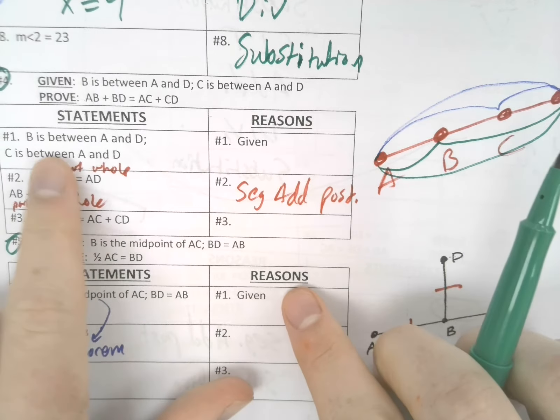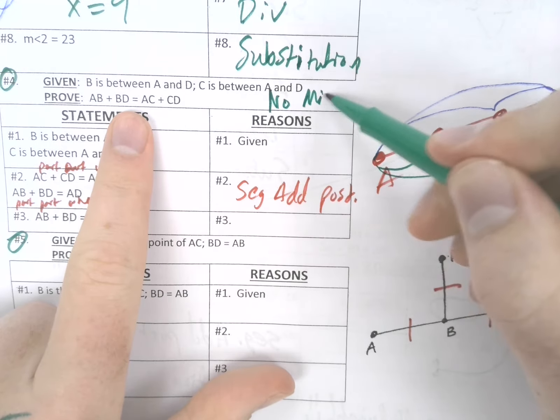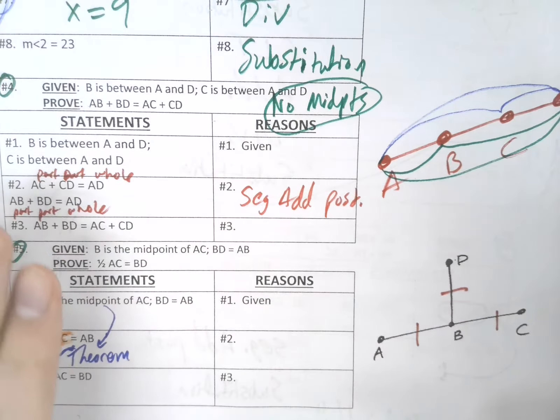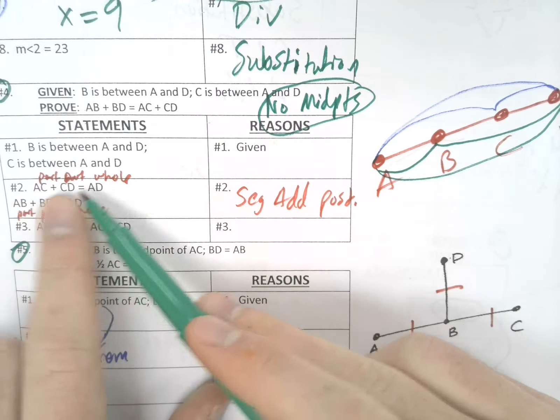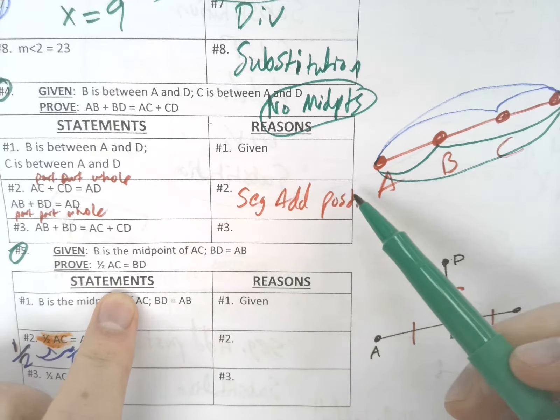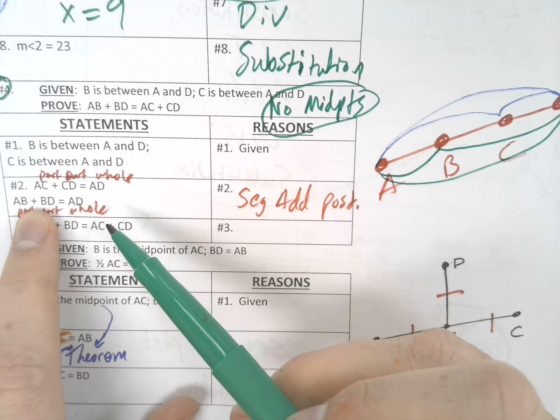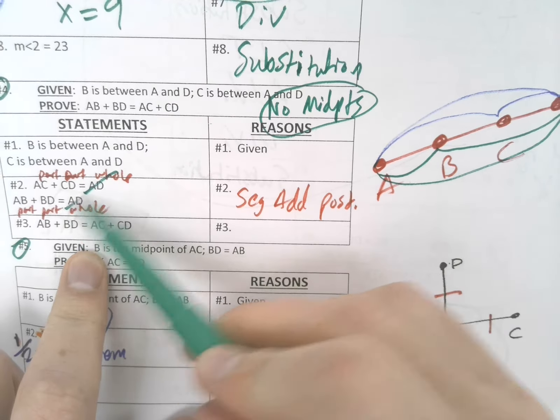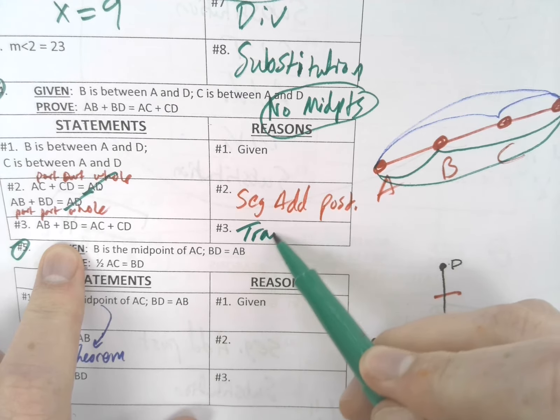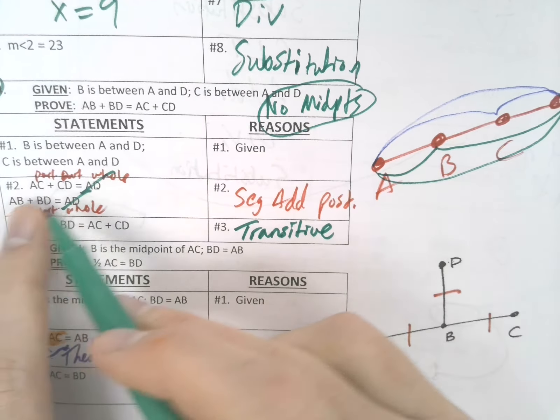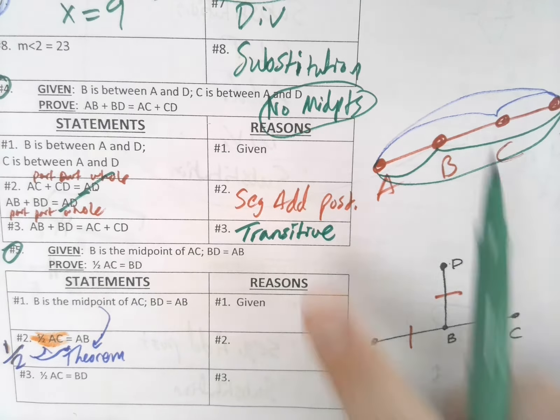Okay, number 4. We're not talking about midpoints at all. What we are told is that part plus part equals whole - that's seg add post. And then how are we able to say that AC plus CD equals AB plus BD? Well, it looks like they're both equal to the same thing, so through the transitive property, these two pieces are going to be equal to each other.